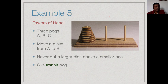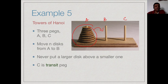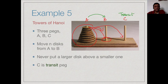Now let's look at a recursive example: the well-known Towers of Hanoi puzzle. We have three wooden pegs A, B, and C, and the goal is to move n disks from A to B. We are not allowed to place a larger disk on a smaller one. If we move the first disk directly to B we get stuck, so we must use C as an auxiliary transit peg in order to accomplish this.